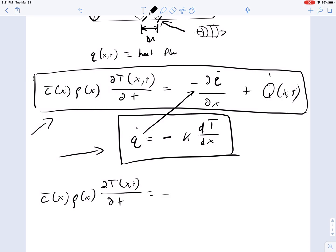equals minus partial by partial x of minus k del temperature, now as a function of x and time, del x, plus of course our q(x,t) that continues to come along for the ride.